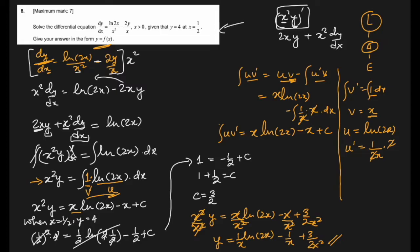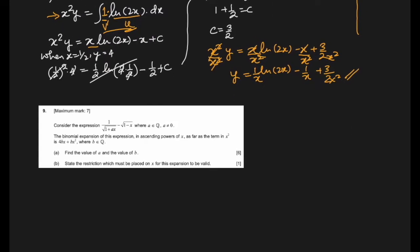The next question asks us to consider the expression 1/√(1 + ax) · 1/√(1 - x), where a is a rational number. We can write this as (1 + ax)^(-1/2) · (1 - x)^(-1/2). The binomial expansion in ascending powers of x up to x² equals a given expression; find values of a and b.